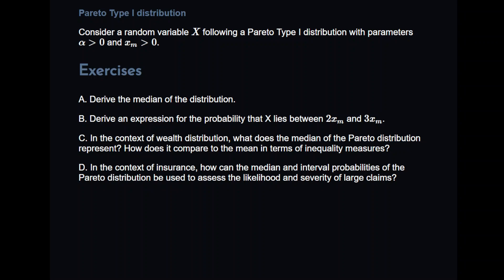Now XM is something we are specifically interested in here. This is one of the parameters of the Pareto type 1 distribution which is the minimum threshold. Have a look at the formulas there and you will see the relevance of this, and likewise alpha.